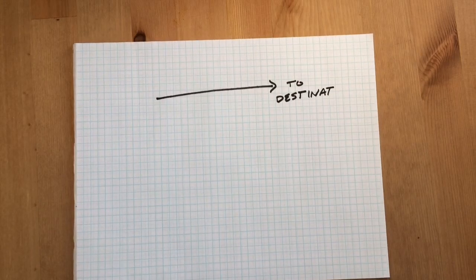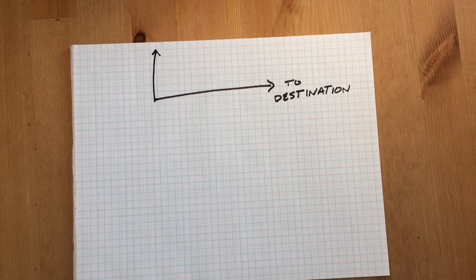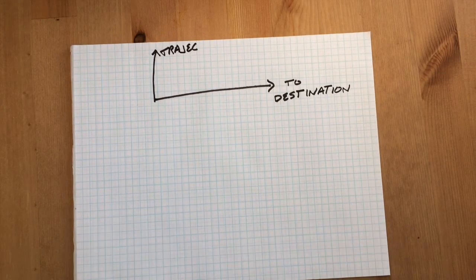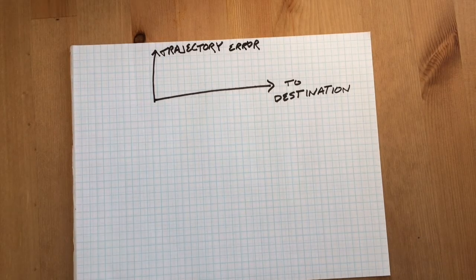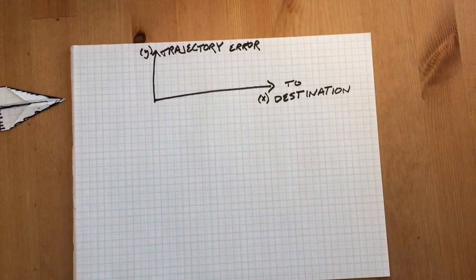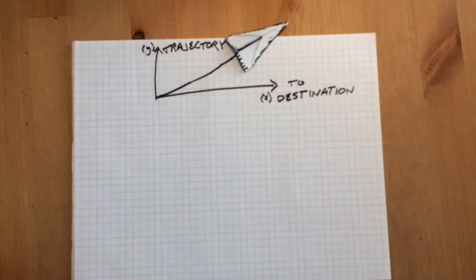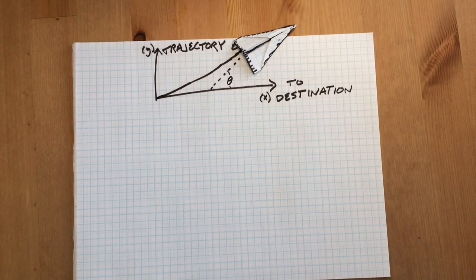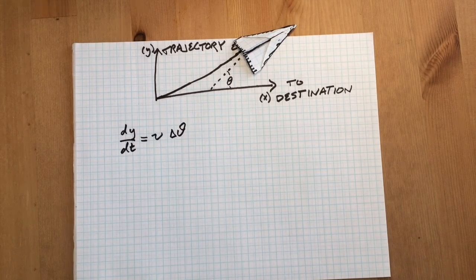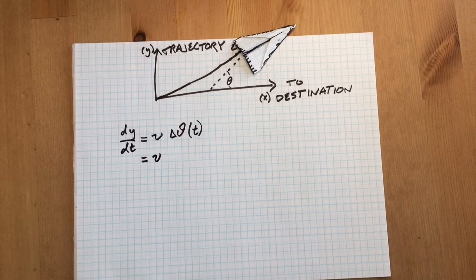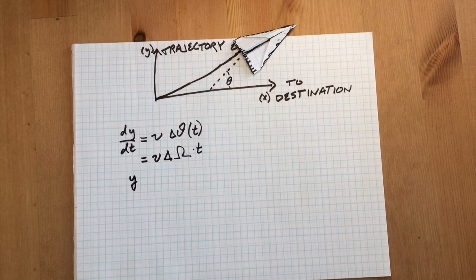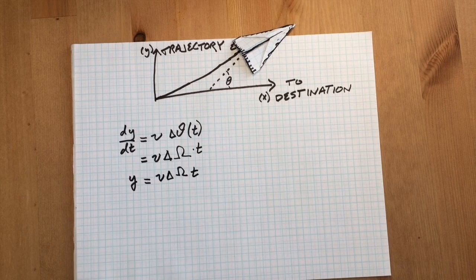To estimate how sensitive these rotation sensors have to be, we can imagine an aircraft moving along towards its destination but having some trajectory error along the way. Over time, the gyroscope will have some error which will build up to an angular misalignment error of theta. For a constant bias error in the measured rotation, let's call it delta omega, the trajectory error will grow quadratically.